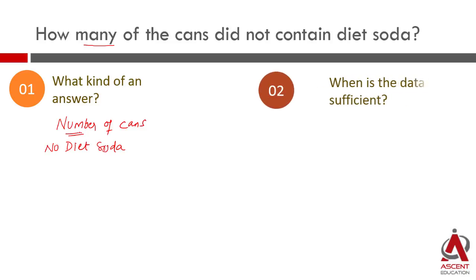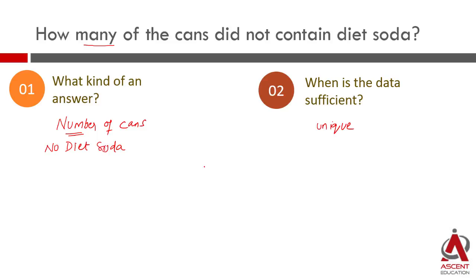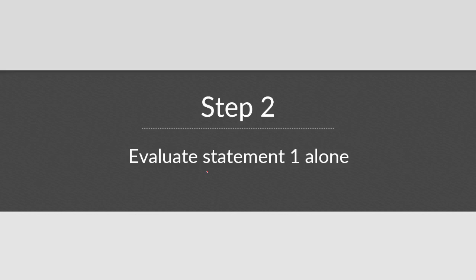When will the data be sufficient? If you are able to come up with a unique answer. If the number of cans that do not have diet soda could be 7 or 11 — more than one answer — then the data is not sufficient. Let's get into the statements and evaluate Statement 1.